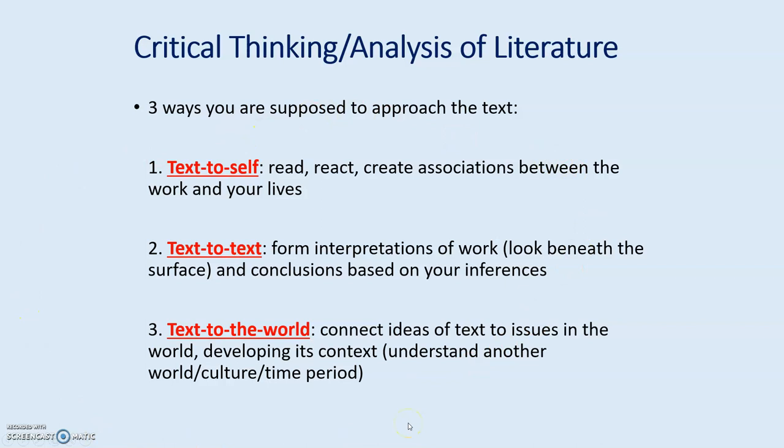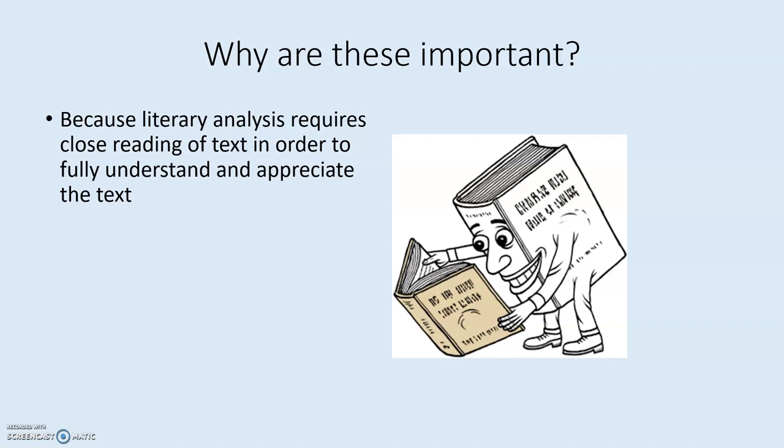Text to self is a little easier, while text to text and text to the world require some critical thinking on our part. So why is all this important? Why is it important to be reading text in this way? Why can't we just read to enjoy what we're reading? Well, if we're talking about English class — advanced composition — we're reading to understand and appreciate. When we read for the sake of analysis, we're really trying to understand a deeper meaning in the text and find the significance behind it. The goal is to acquire a deeper understanding and appreciation for the text.